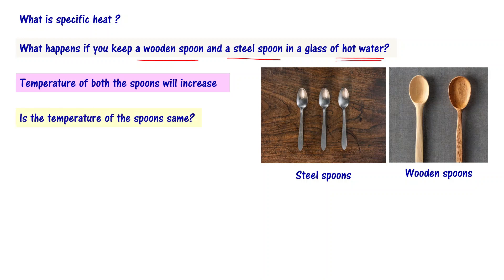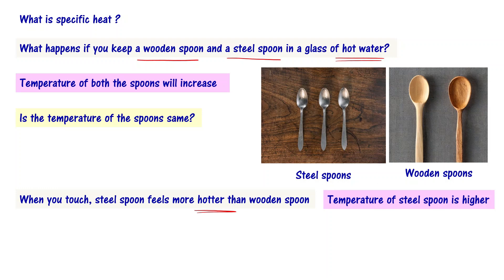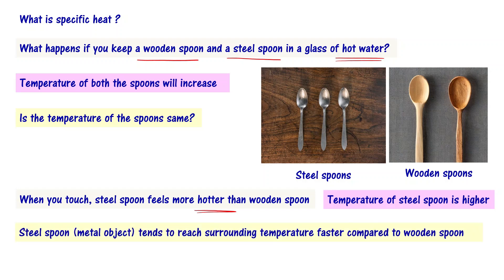The same question: is the temperature of the spoons the same? It is going to be different. When you touch them, you feel that the steel spoon is hotter than the wooden spoon. In the fridge, steel spoon temperature was lower, and in hot water, steel spoon temperature is higher compared to wooden spoon. So what we can say is: the steel spoon, that is the metal object, tends to reach surrounding temperature faster compared to the wooden spoon.